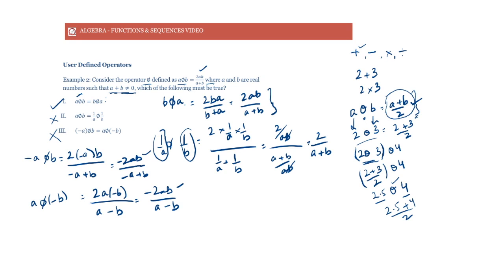Do you recognize this expression? 2ab / (a + b) — this is the harmonic mean of a and b. A user-defined operator is just like any other operator such as addition or subtraction, except that it is not a standard global operator used by everyone. It is specifically designed for that question only.